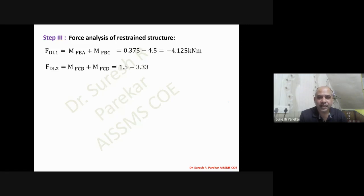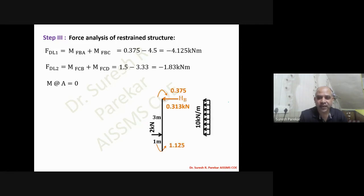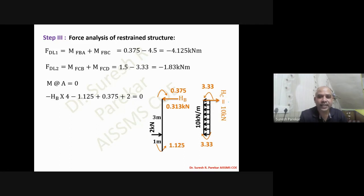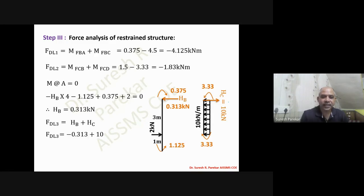For FDL3, we calculate HB from column AB and HC from column CD. HB = 0.313 kN; for CD the fixed end moments minus 3.33 and plus 3.33 cancel, and the reaction at C and D equals 10 kN (total load divided by 2). FDL3 = 9.687 kN.